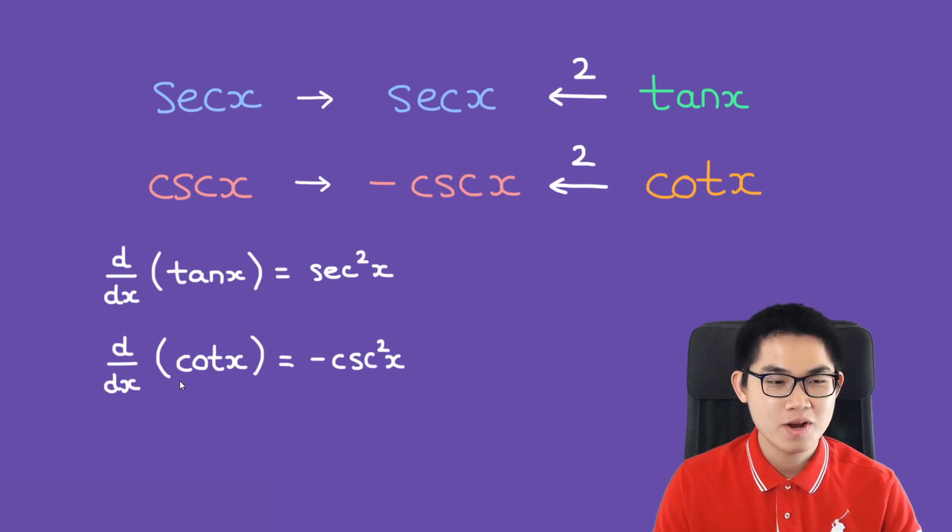And same logic here. What is the derivative of cotangent? It's going to be negative cosecant squared. So this is what we have.